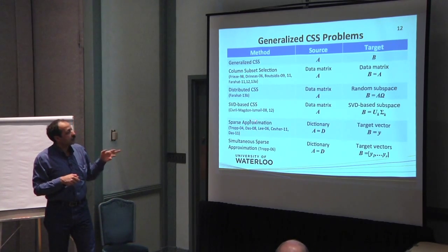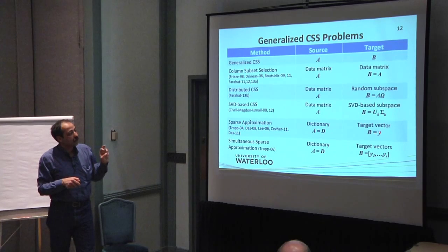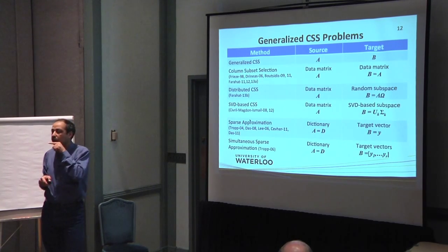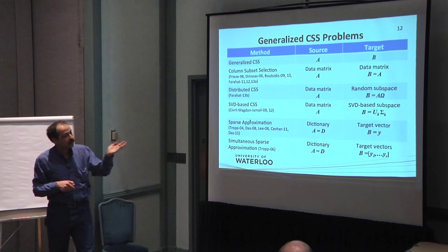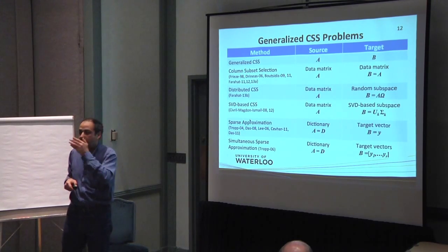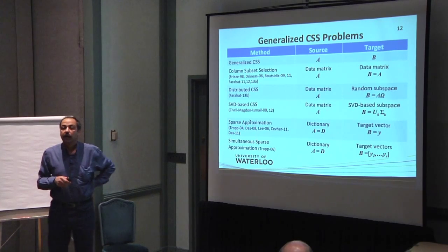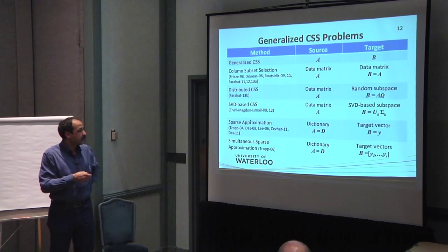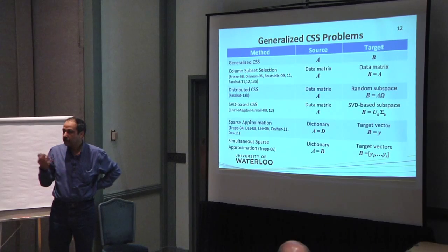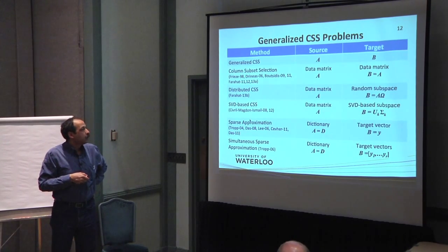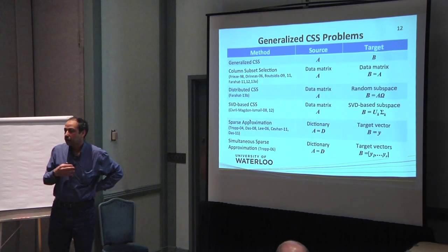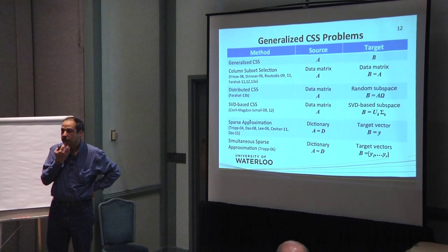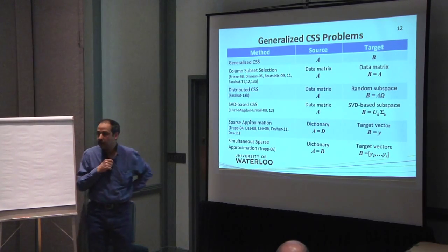It is identical to some of the existing algorithms like SVD-based column subset selection in sparse approximation. In sparse approximation, you can assume that B is your target vector. And in simultaneous sparse approximation, you can assume that B is the set of vectors that you want to simultaneously approximate sparsely by some dictionary. So many existing algorithms can be cast in this form, and it's a very efficient solution, basically a really efficient solution to solve this problem.